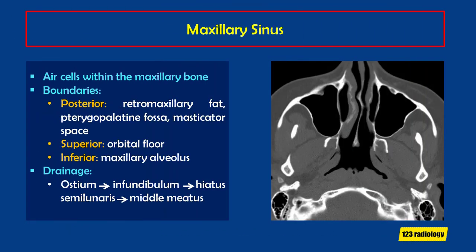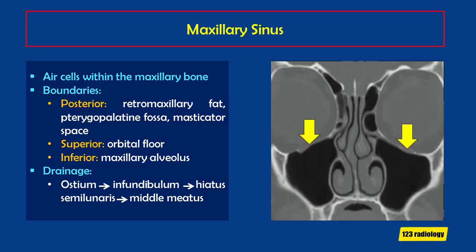The maxillary sinuses are air cells within the maxillary bone. They are bounded posteriorly by retromaxillary fat, pterygopalatine fossa, and masticator space. Superiorly, bounded by the orbital floor, and inferiorly by the maxillary alveolus. They drain to the middle meatus through the ostium, infundibulum, and hiatus semilunaris.